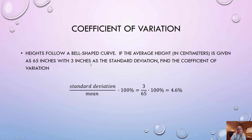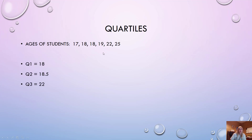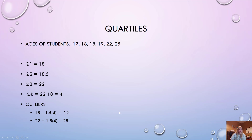Coefficient of variation: you'll either be given or need to find the mean and standard deviation, then it's simply standard deviation divided by the mean, expressed as a percentage. For quartiles: with data in order, cut it in half — Q1 is the middle of the lower half, Q2 is the median, Q3 is the middle of the upper half. IQR equals Q3 minus Q1.